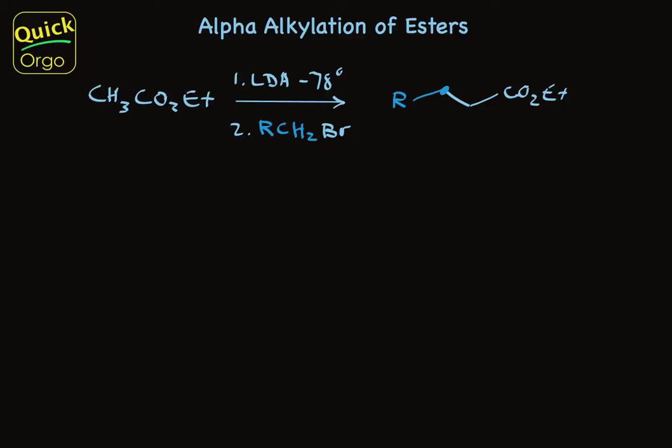Treatment of ethyl acetate with LDA at minus 78 degrees, and in the second step with a primary alkyl bromide, replaces one of the alpha-hydrogens of that ethyl acetate with the alkyl group. I've highlighted the alkyl group in blue, and here is the new carbon-carbon bond.